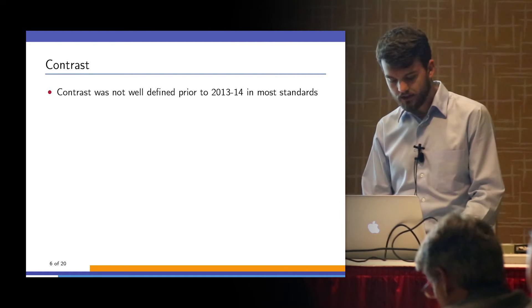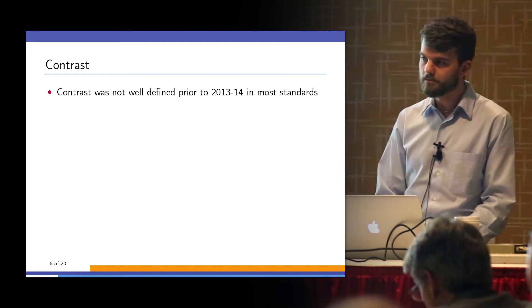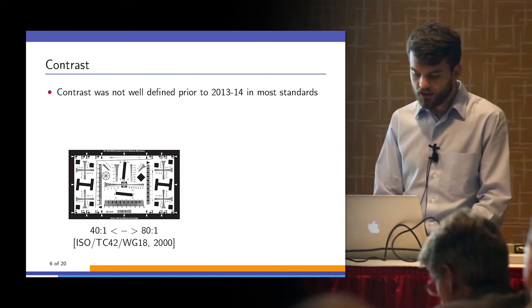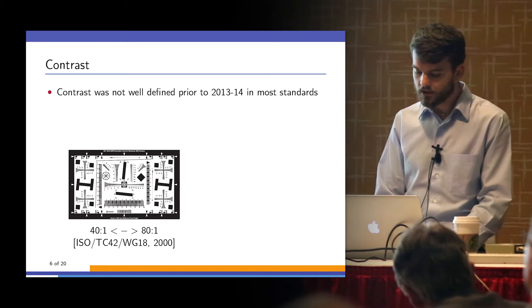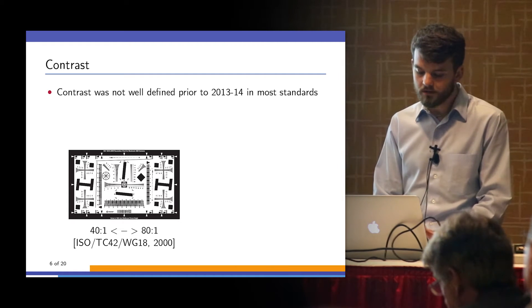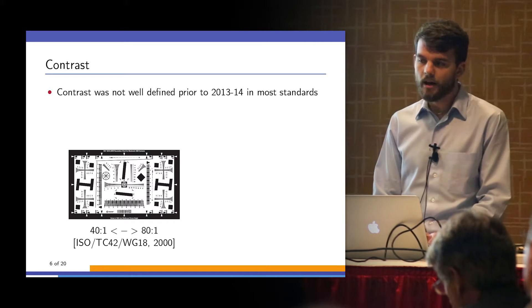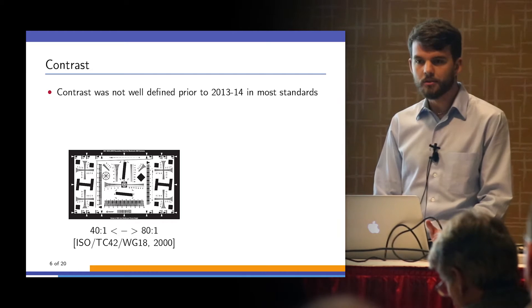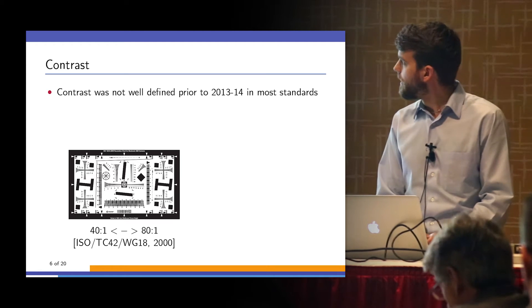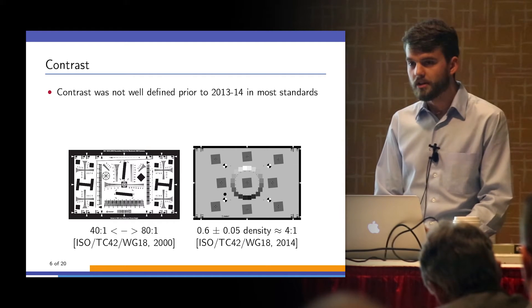What is not often talked about is the contrast of the target, at least not in literature. Prior to fairly recently, the contrast was only ever defined as somewhere around 40 to 80 to 1. This was mostly chosen because that was about the maximum of what most reflective materials can do. More recently, in 2014, the standard was redefined to use a 4 to 1 contrast ratio.